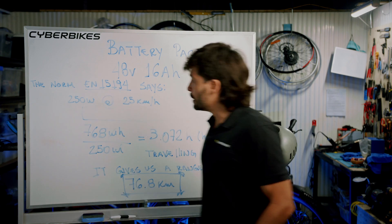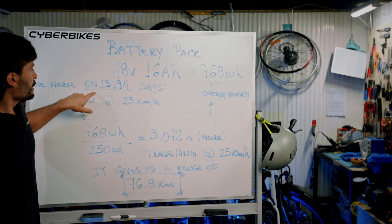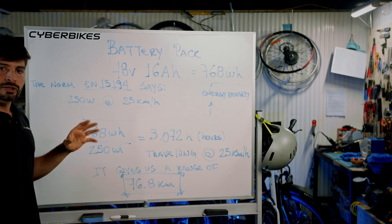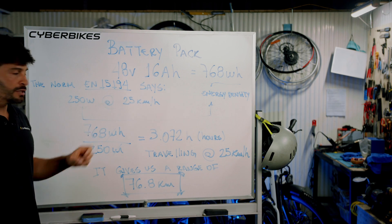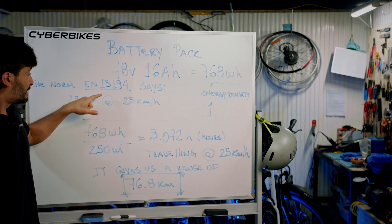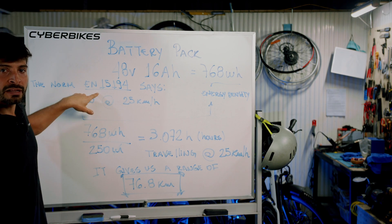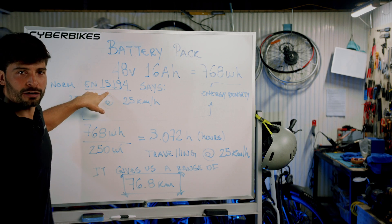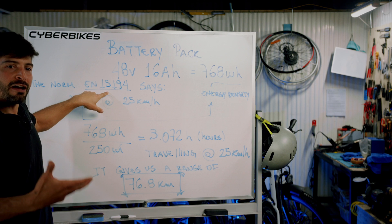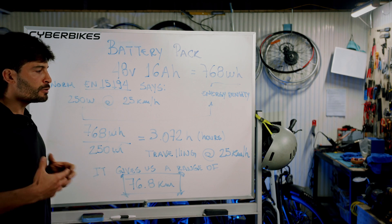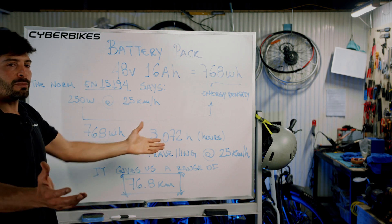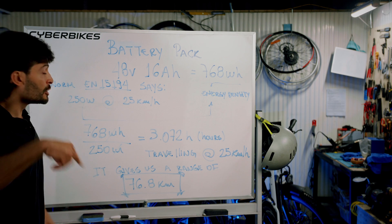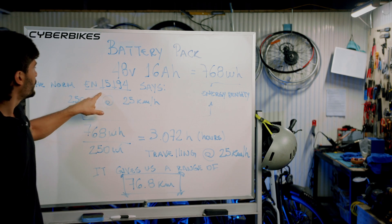The norm EN 15194 is the standard that rules Europe, Australia, Brazil and many other countries. This norm has been affecting cyclists here in Australia. To get this norm you have to pay $250 — if they want everyone to follow it, why don't they make it readily available to anyone?